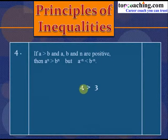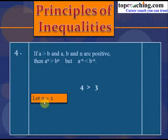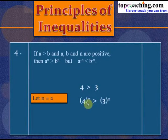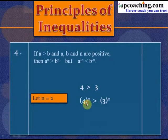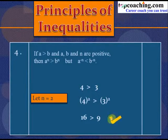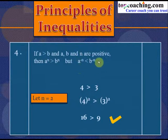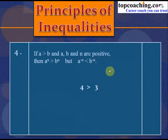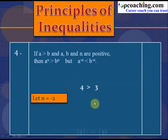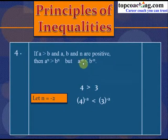For example, with 4 > 3 and n = 2: 4² > 3², i.e., 16 > 9, which is true, proving the first part. For the second part, with n = −2: according to the principle, 4⁻² < 3⁻², giving 1/16 < 1/9, which is also true.